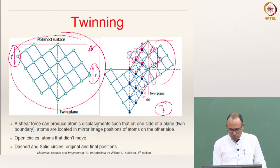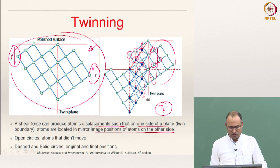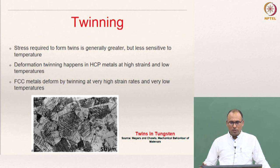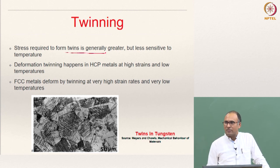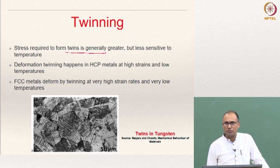A shear force can produce atomic displacement such that on one side of a twin boundary, atoms are located in mirror image positions relative to atoms on the other side. The stress required to form twins is generally much higher than for slip, but it is not strongly dependent on temperature, whereas for slip it is the other way around.